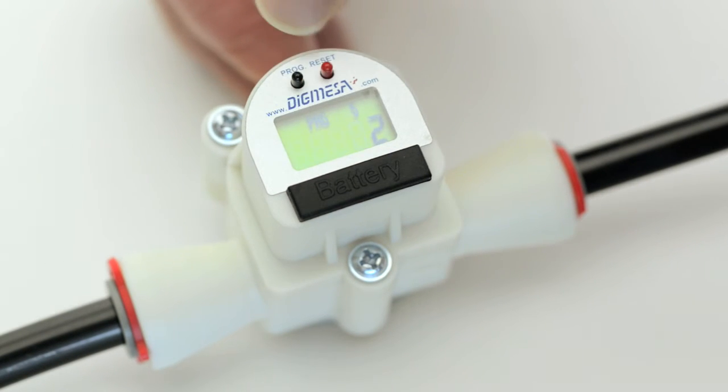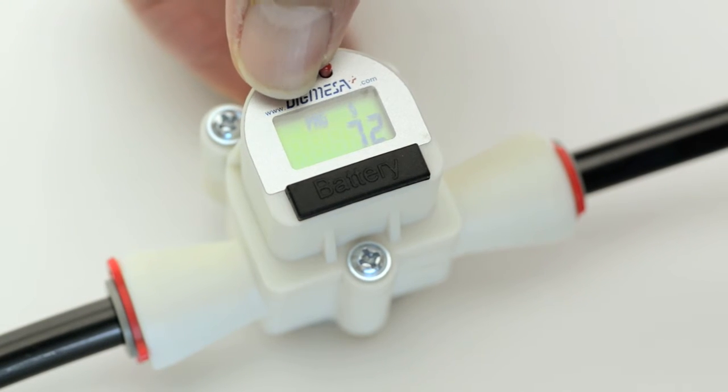If it is accidentally pressed too many times, simply continue to press the red reset pin until the desired value is displayed. Pressing once on the black program pin moves the display to the second digit from the right, which appears with a flashing zero.